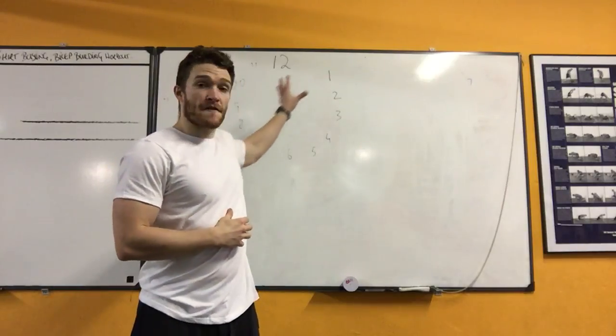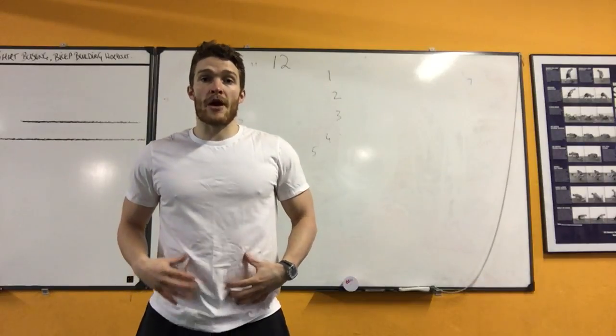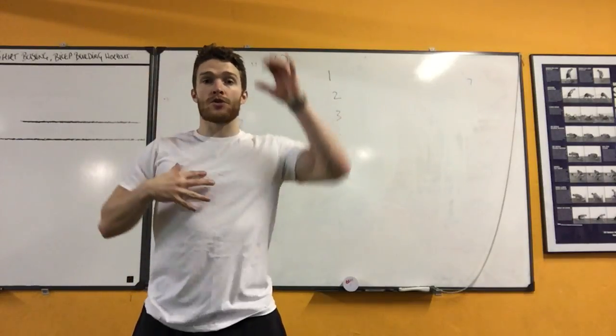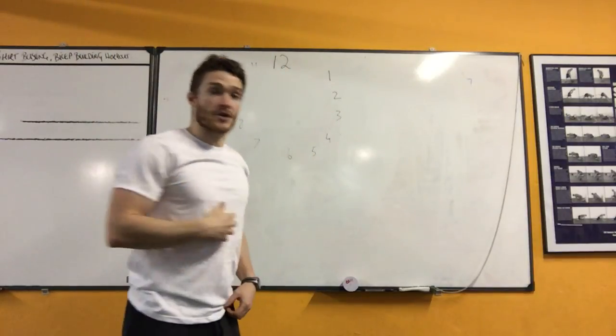What you're going to do is imagine you've got a clock face on the wall and you get yourself into a squat position. From there you're going to reach each hand towards every number on the wall face until you do a complete circle, like so.